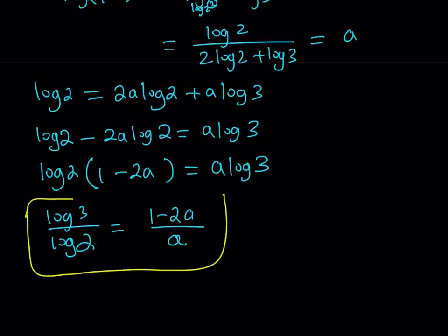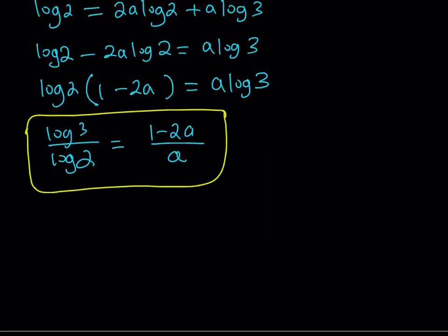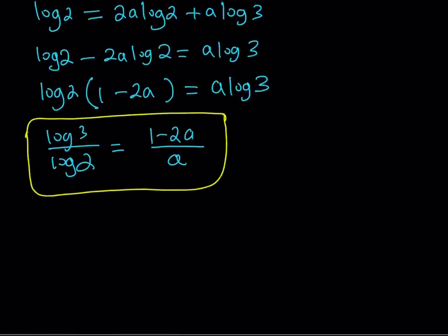Great. So now, if I can get the same part or expression in the given expression, which is the 72 with base 6, then I should be able to substitute. So I'm supposed to evaluate this expression in terms of a. But how can I break it down? Again, using change of base, I can write it as log 72 over log 6.